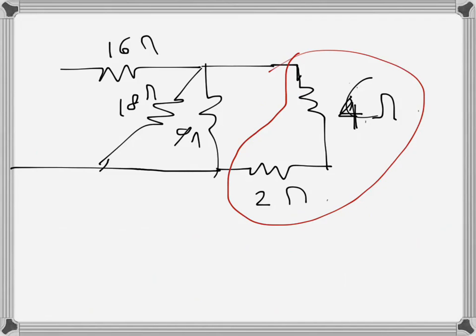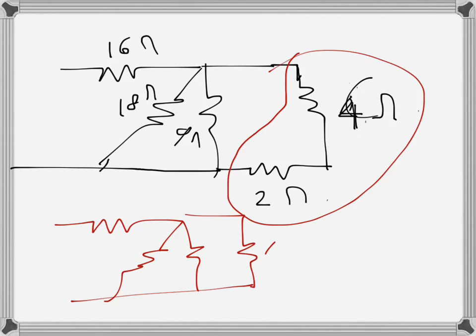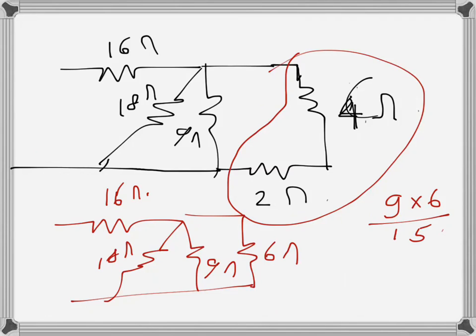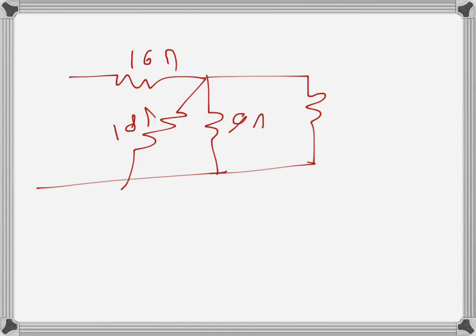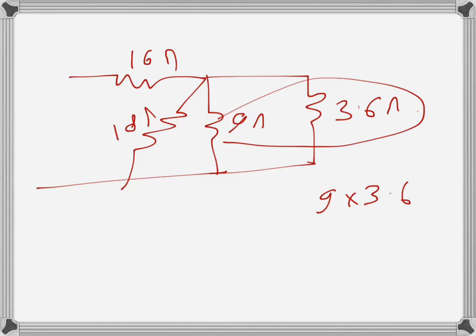Now these two in series give 6Ω, and that 6Ω is in parallel with 9Ω. So we have 6Ω and 9Ω in parallel, plus 18Ω and 16Ω. The 6 and 9 in parallel: 9 times 6 over 15 gives 3.6Ω. So we now have 16Ω, 18Ω, and 3.6Ω in parallel with 9Ω.